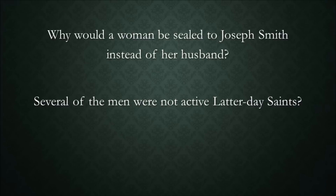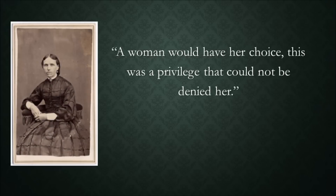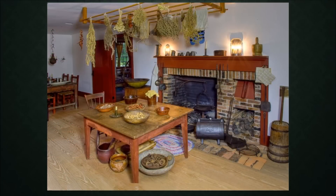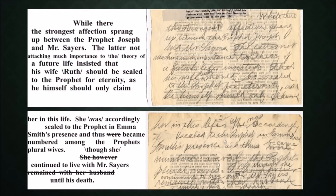The obvious question is why a woman would be eternally sealed to Joseph Smith instead of her legal husband. Several of the men were not active Latter-day Saints, so the women could not be sealed to them. For church members, Lucy Walker recalled Joseph's teaching: a woman would have her choice — this was a privilege that could not be denied her. The relationship between Edward Sayers, a non-Mormon, and his civil wife Ruth and the prophet is a good example. Historian Andrew Jensen recorded that while Joseph hid at their home from Missouri lawmen in 1842, 'the strongest affection sprang up between the prophet Joseph and Mr. Sayers. The latter, not attaching much importance to the theory of a future life, insisted that his wife Ruth should be sealed to the prophet for eternity, as he himself should only claim her in this life.' How many of Joseph's other sealed wives sought him out is unknown, but those legally married to non-members are likely candidates.